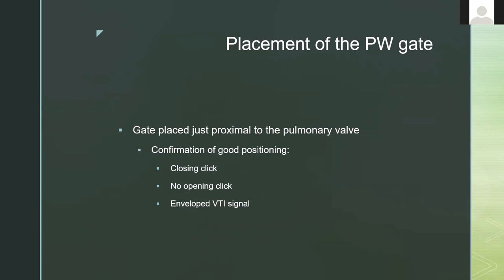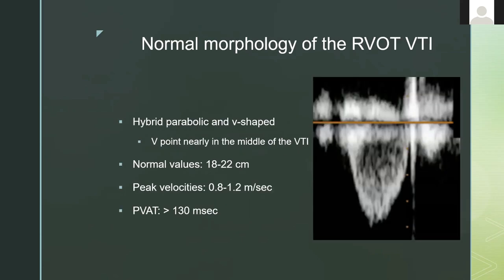It's a little less prone to error and you can even drop the gate into the pulmonary artery if you want. The normal morphology of the velocity time integral is a hybrid between a parabolic waveform and a V-shaped waveform. This picture shows a very normal-looking RVOT velocity time integral — the point of that soft V or U sits at the middle of the VTI. Normal values are about the same as an LVOT VTI: around 20 cm, with peak velocities around one meter per second.